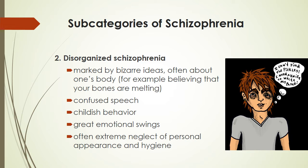The next kind is Disorganized Schizophrenia, and this is marked by bizarre ideas, often about one's body — for example, believing that your bones are melting. Confused speech: if you look at the comic on the right-hand side, this guy is saying 'I can't find the pickles, I need a knife to write my paper.' The words are legitimate words, but the way they're strung together doesn't make any sense. Also childish behavior, great emotional swings, and they often neglect their personal appearance and hygiene. People may literally be afraid to get in the shower or bathtub, believing something terrible will happen, so they may not have bathed in weeks or even years.